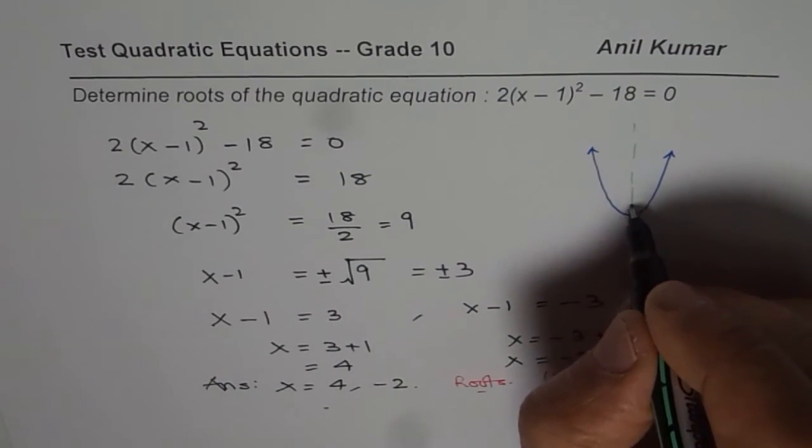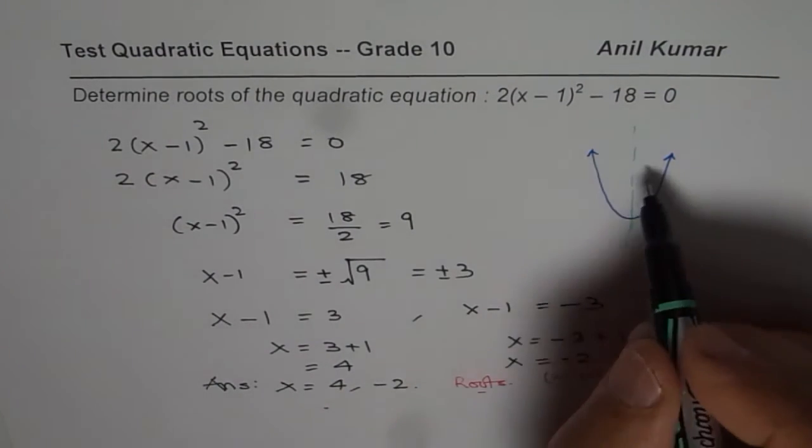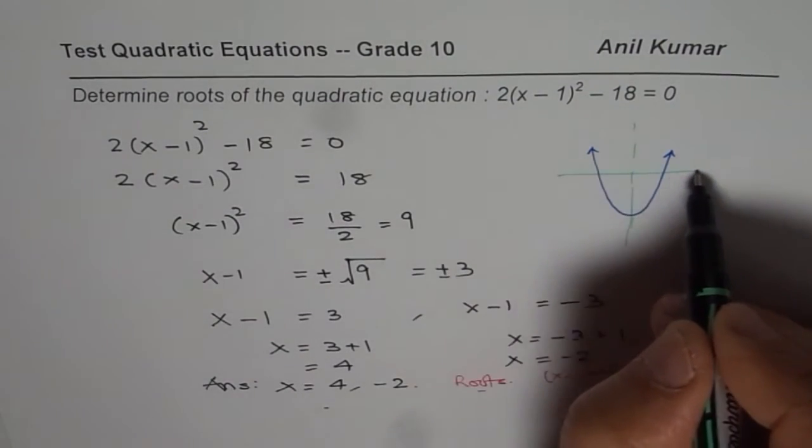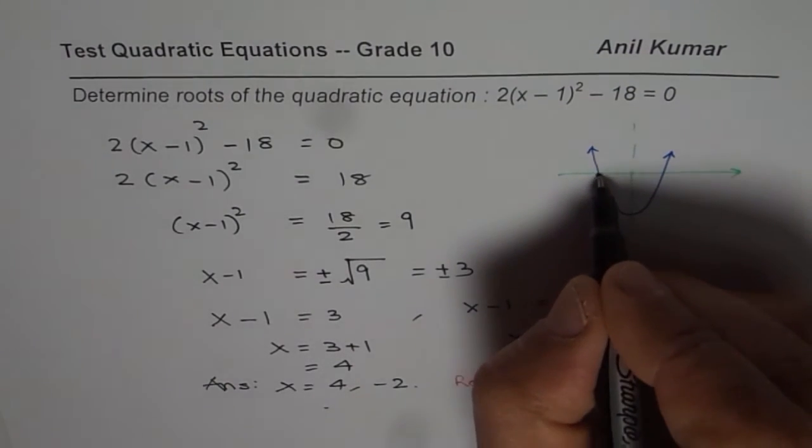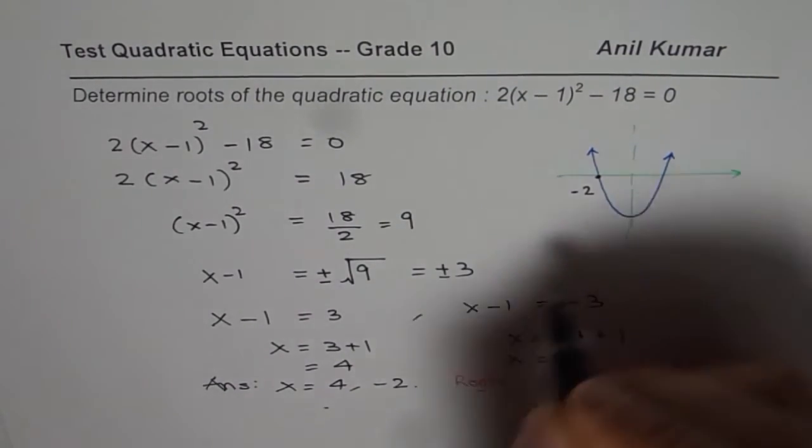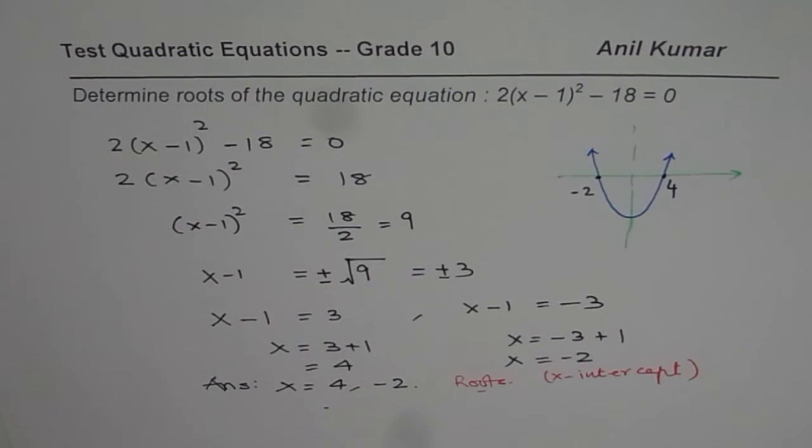y intercept is minus 18, x is at minus 1. This is at minus 1 and if you, let me just draw the x axis, what you will notice is that the x intercepts will be at minus 2 and at 4. So that is what you will notice.